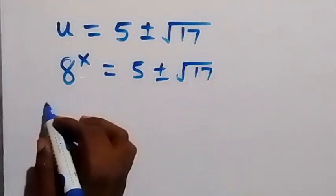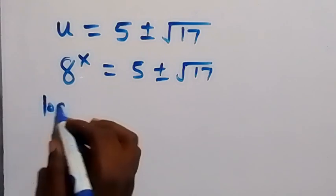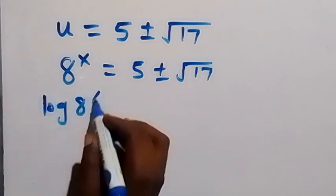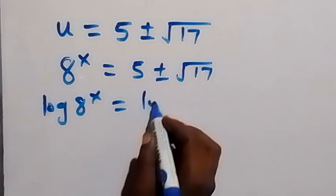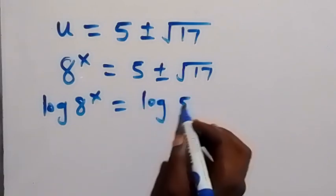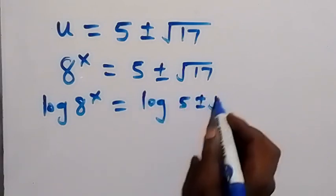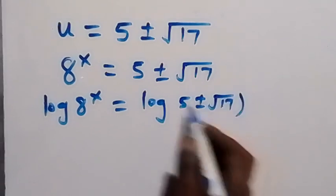And from here we can take the log on both sides. We have log 8 raised to power x equals to log 5 plus or minus square root of 17. And from here